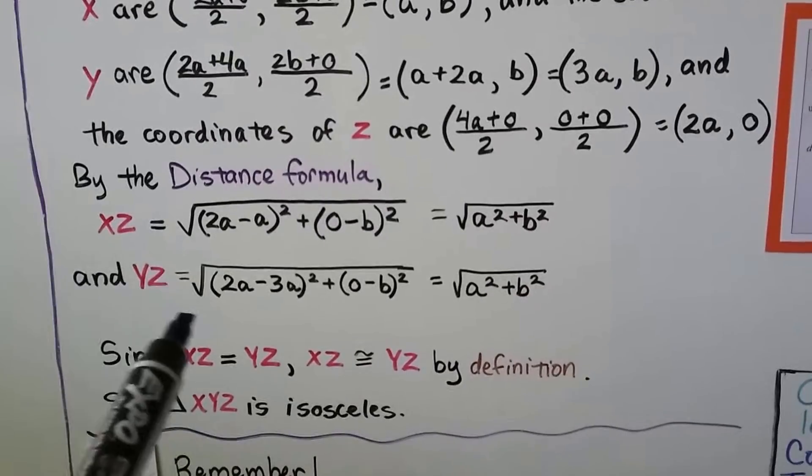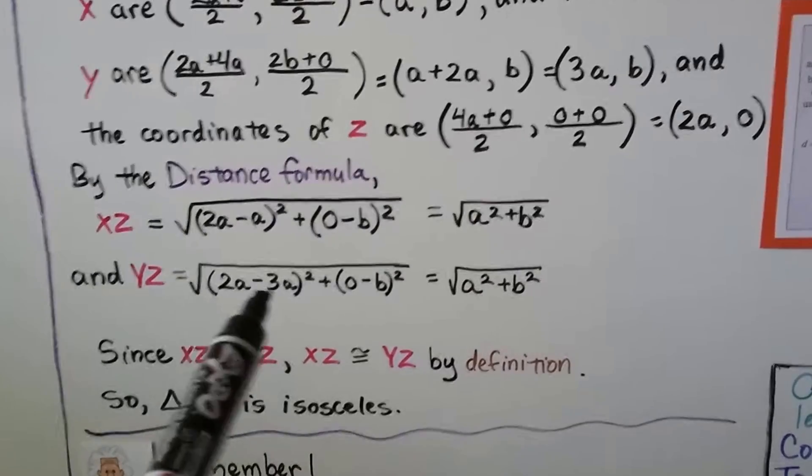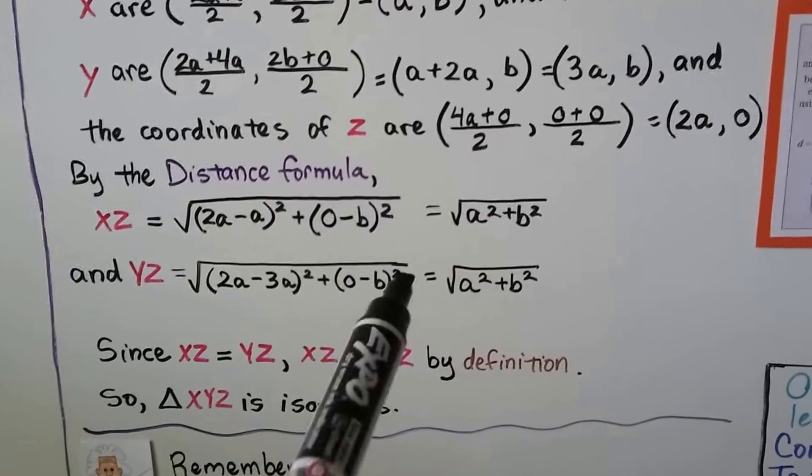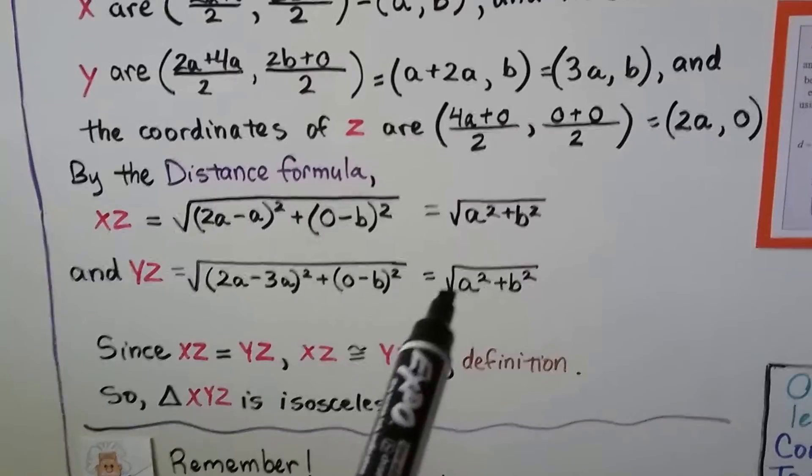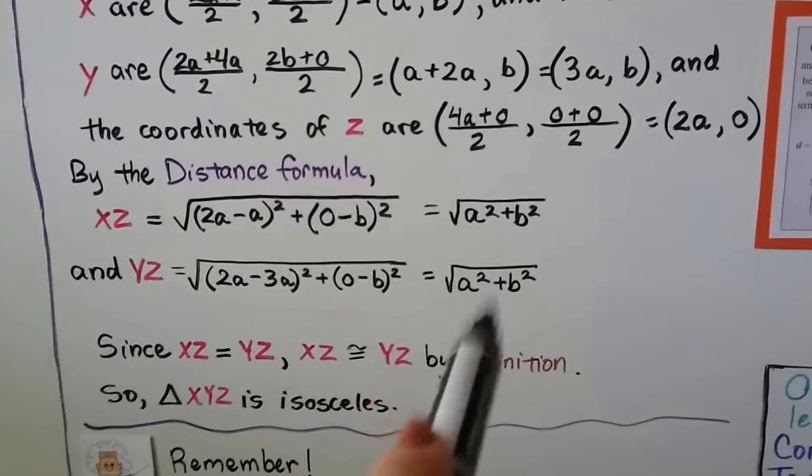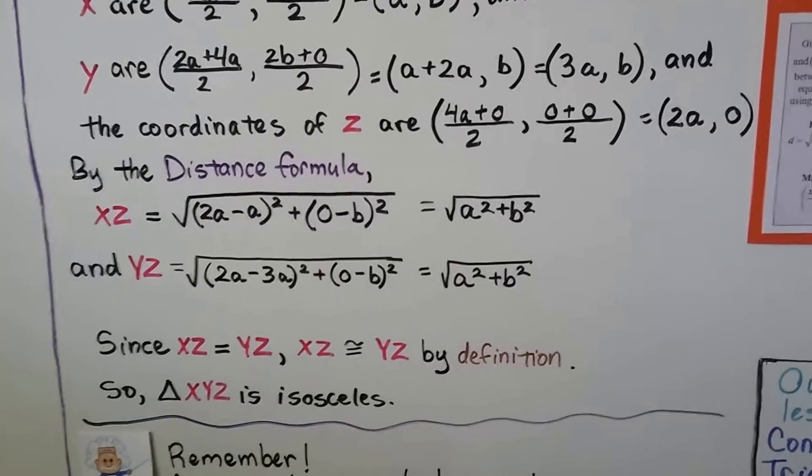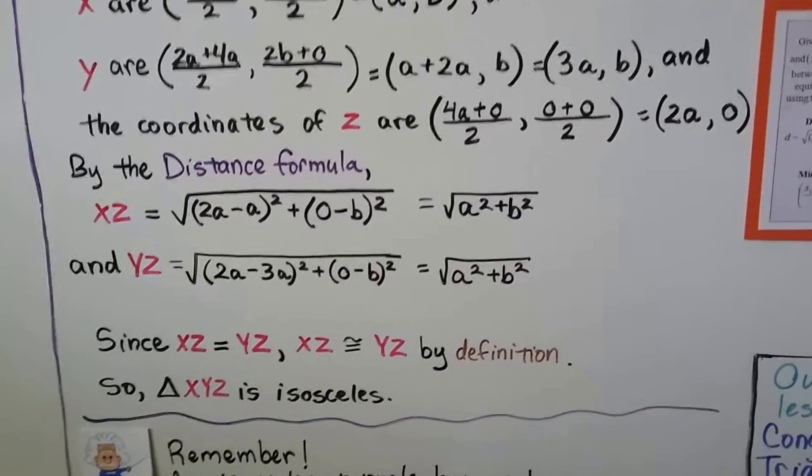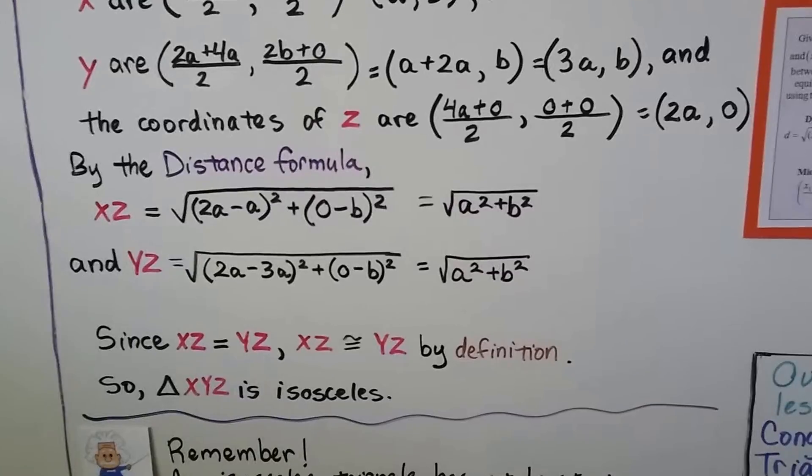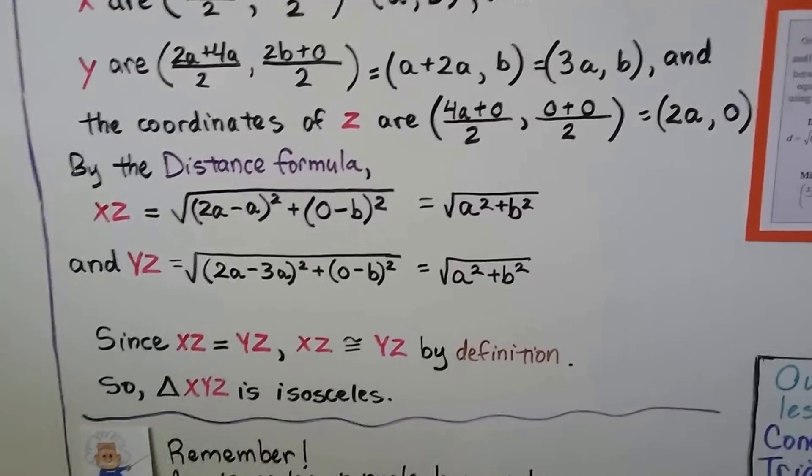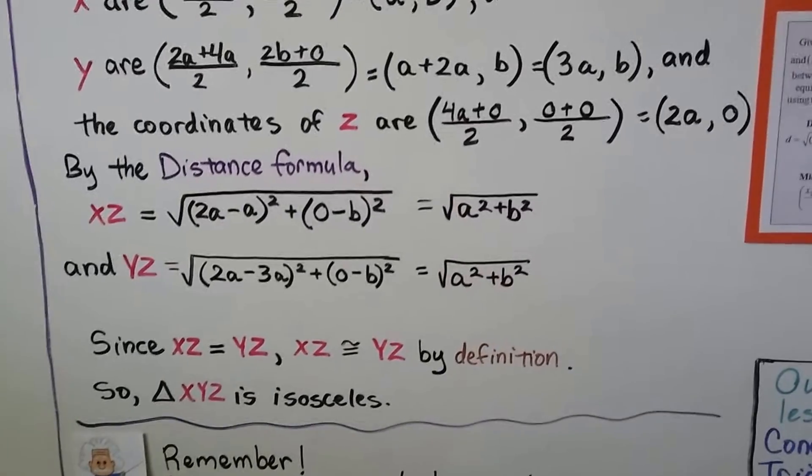And YZ is the square root of (2a minus 3a) squared plus (0 minus b) squared, and that's going to simplify to the square root of a squared plus b squared. So these are the same. And since XZ is equal to YZ, XZ is congruent to YZ. Well, that's by definition. If they're equal, they're congruent. So triangle XYZ is isosceles.